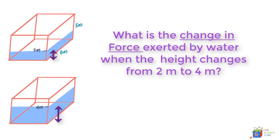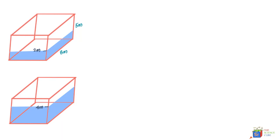We will approach this by first finding the average pressure on the wall when the height of water is 2 meters. Knowing the average pressure, we can find the force on the wall. Likewise, we find the average pressure in the second case, get that force, and the difference gives the change in force. The key challenge is finding the average pressure when pressure varies with the depth of the liquid.